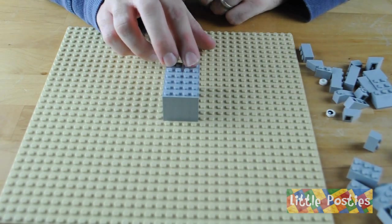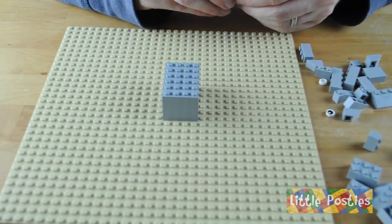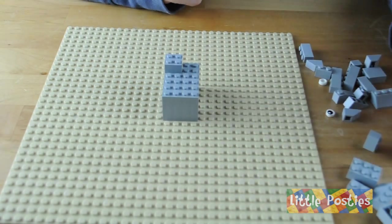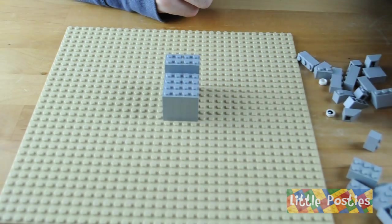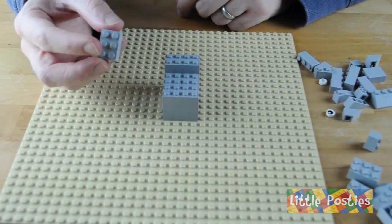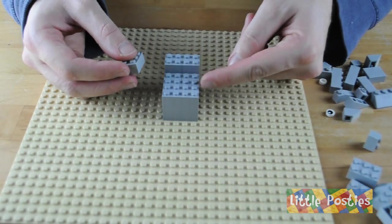Now we're going to start on the back. Let's grab a 2x2 brick and another one. Then we're going to grab a 2x3 brick and lock these two bricks in.